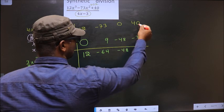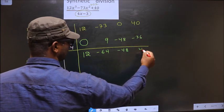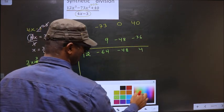We get minus 36. Now you add these 2. We get 4.